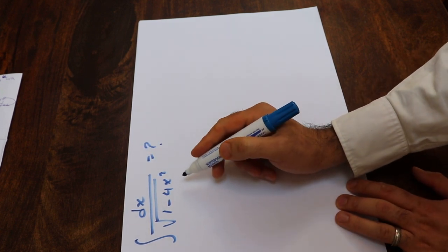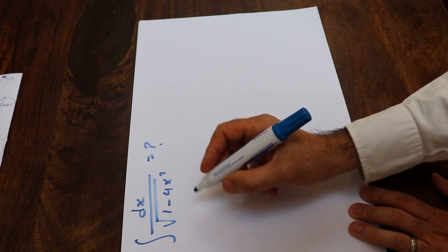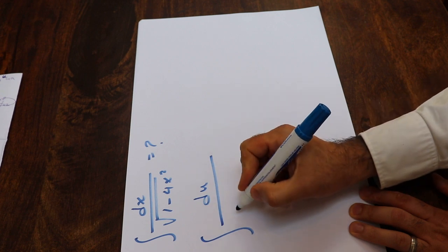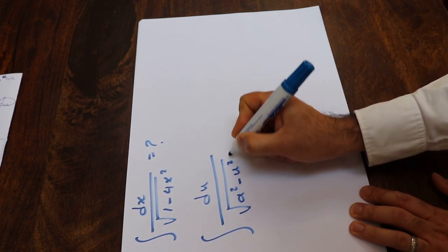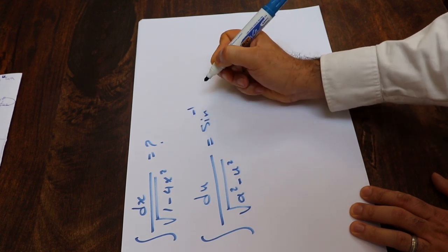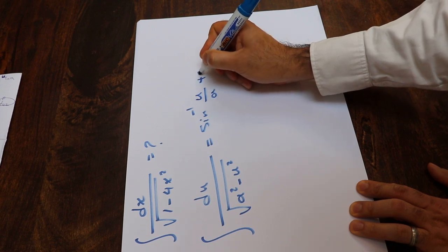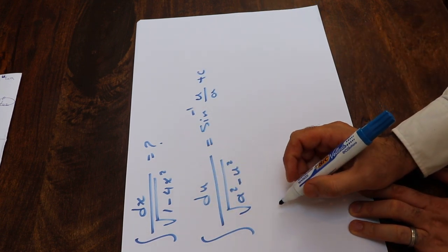So to solve this integral, you need to know one formula from table of integrals, that is integral of du divided by square root of a² minus u² will be equal to sin⁻¹(u/a) plus c. So that's the formula that we will use today to solve this integral.